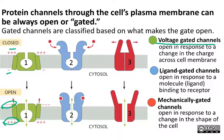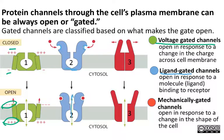The second type are ligand-gated channels. Ligand is the name for one molecule that binds to another. You can see the little binding pockets on the protein. When nothing is bound to this protein, it's closed. But when you have ligand bound, the channel opens and that allows material to pass through the channel based on concentration.